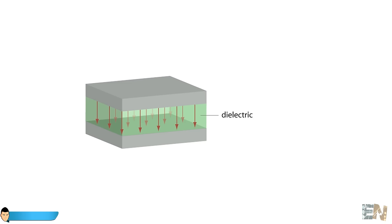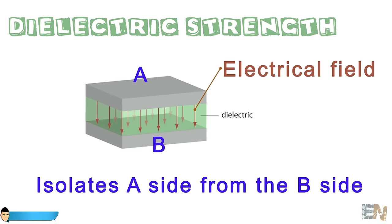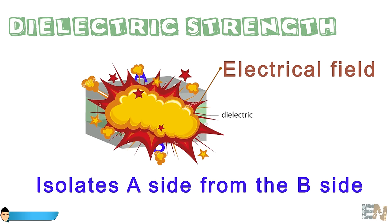I bet that you heard about the term of dielectric strength. If not, I'll explain it to you. A dielectric is an isolating material. And the dielectric strength is the maximum electrical field that a pure material can withstand under ideal condition without breaking down and experiencing failure on its isolating properties.